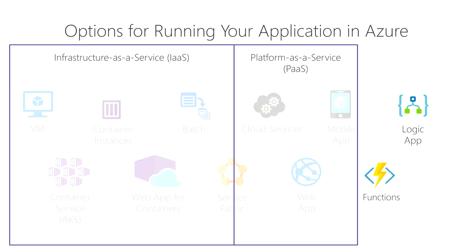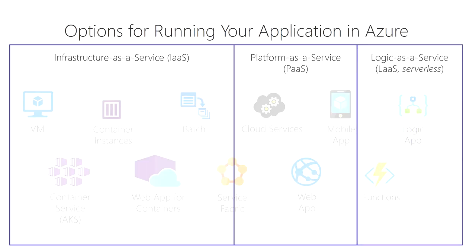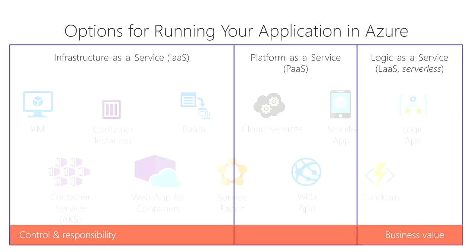Services in the platform-as-a-service category also need scaling instructions — Azure doesn't do that automatically. I can have automatic scaling in a web app, but I still need to configure it myself, and I don't want that for this app. And Kubernetes would scale, but it'd be running all the time. So I end up in the last category: logic as a service, or serverless. That ends up allowing me to work a lot on business value rather than worrying about the plumbing and infrastructure of a VM.